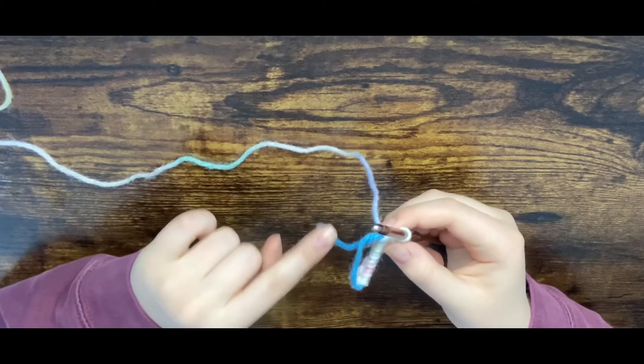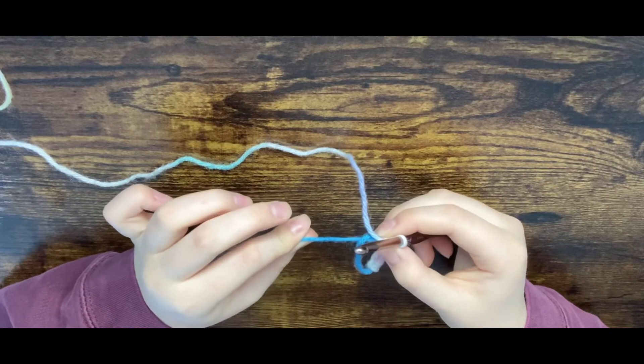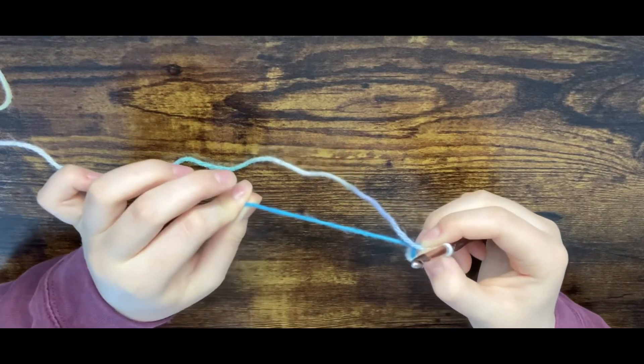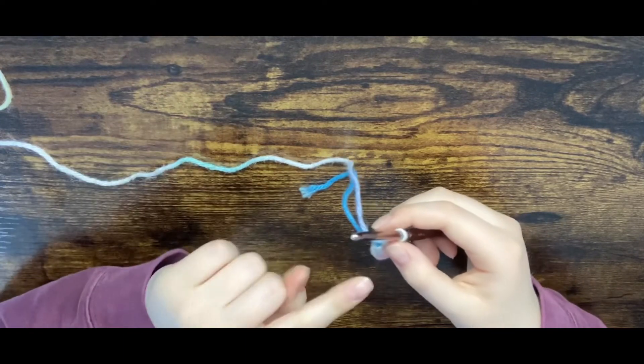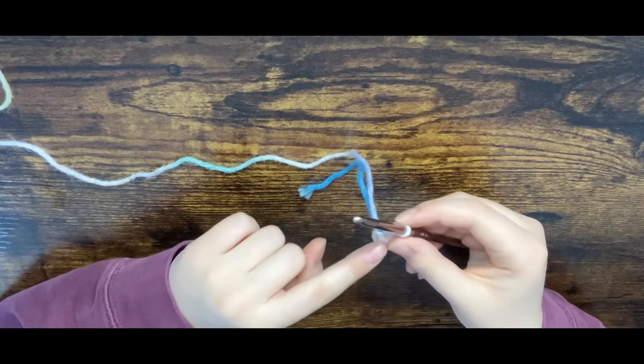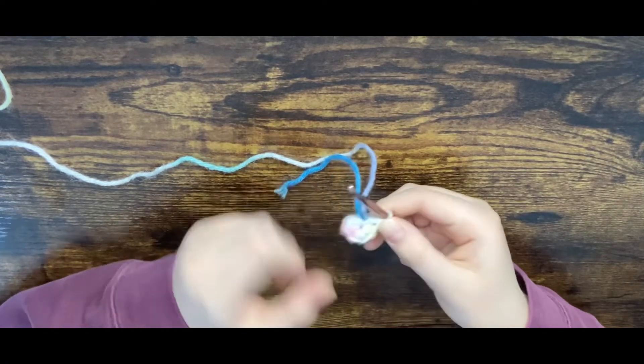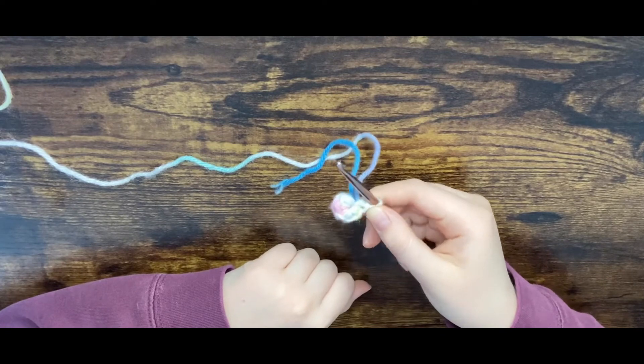You're going to take your thread and pull it shut. Make sure while you're crocheting, you're crocheting over the loop and that extra thread because that's what cinches. So there is your magic circle or your cinch circle.